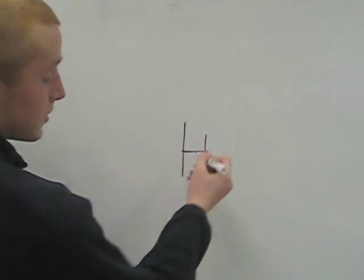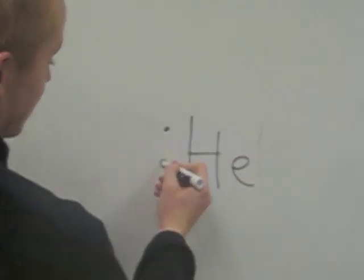Now don't forget that helium, although it is in the eighth column, has only two valence electrons.